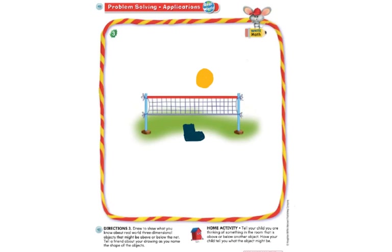So this is something you can also do at home. You can think of something in the room that is above or below another object. If you are working with your parents or someone at home, they can help you around your house describing objects that are above or below each other. Thank you for watching.